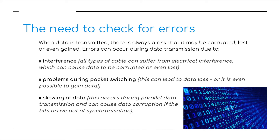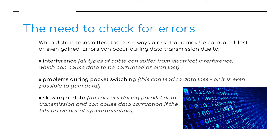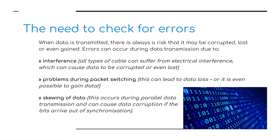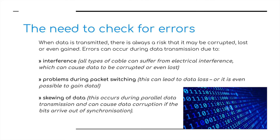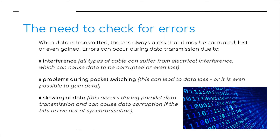When data is transmitted there is always a risk that it may become corrupted. Data might get lost or we might even gain additional bits of information. Errors can occur during data transmission due to one of three factors: first, interference — all types of cable can suffer from electrical interference which can cause data to be corrupted or even lost. Second, problems during packet switching can lead to data loss or even possible gaining of data — if a packet has been requested to be sent again and again we might end up with additional packets of information. Finally, the skewing of data — we know about parallel transmission and that sometimes data can be out of sync when it arrives at the receiver, and this can cause problems too.